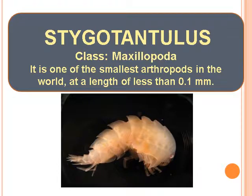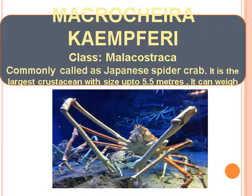Stygotantula — Class Maxillopoda, is one of the smallest arthropods in the world at a length of less than 0.1 mm. Macrocheira — Class Malacostraca, commonly called as Japanese Spider Crab. It is the largest crustacean with size up to 5.5 meters and can weigh up to 19 kg.